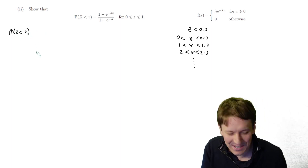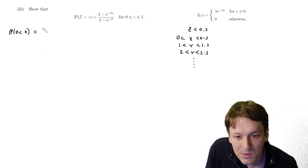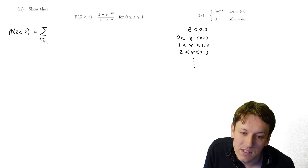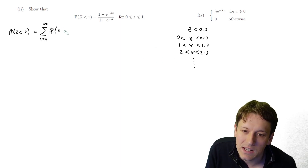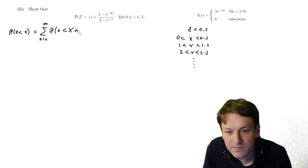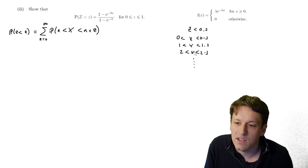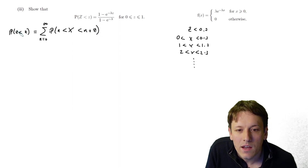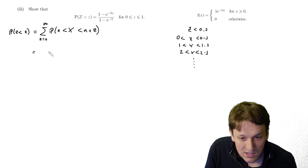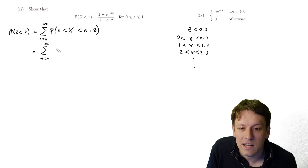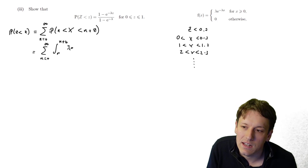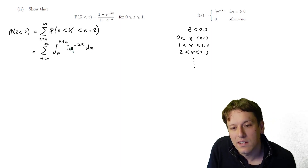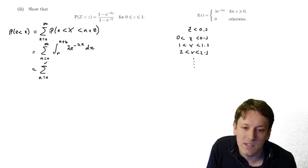So I write P(Z < z) as the sum from n = 0 to infinity of P(n ≤ X < n+z). Note: capital Z is the random variable and little z is the argument — keep them separate when writing. Each term in the sum is the integral between n and n+z of λe^(−λx) dx.